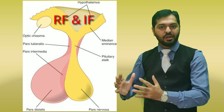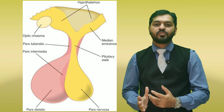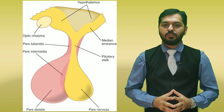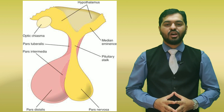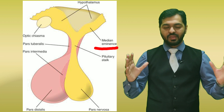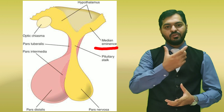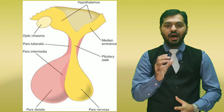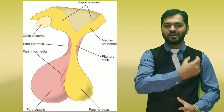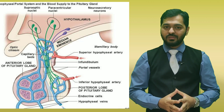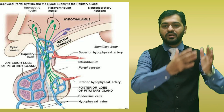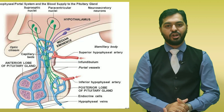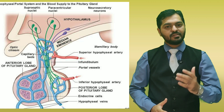That covers the anterior pituitary or adenohypophysis. Coming to the posterior pituitary or neurohypophysis — just like the anterior pituitary, the posterior is also composed of three major components. The first is the median eminence, which is the swollen part actually belonging to the hypothalamus that connects to the pituitary. The second is the infundibulum, also known as the hypophysial stalk — a stalk-like structure connecting the pituitary gland to the hypothalamus, consisting mainly of axon fibers from hypothalamic neurons running down through it. The lowermost part is known as the pars nervosa.